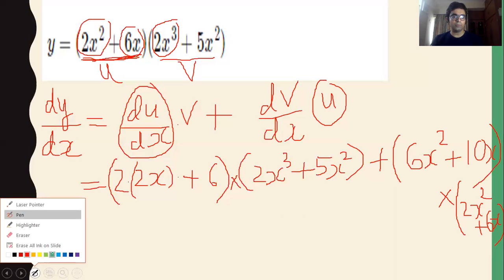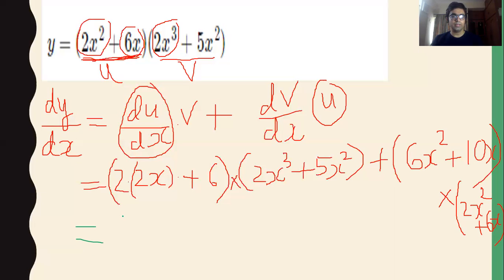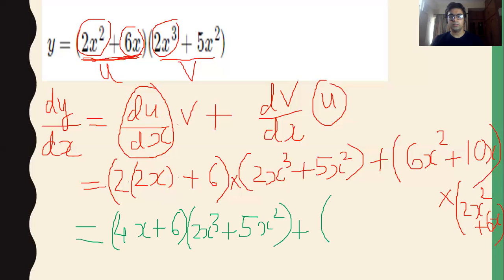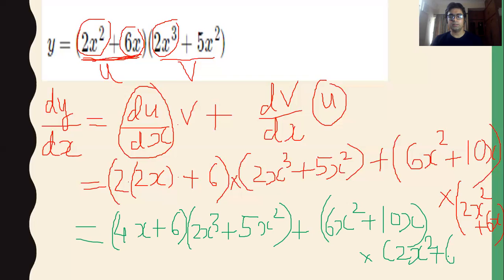Now you have to solve this. You get: (4x + 6) into (2x³ + 5x²), plus (6x² + 10x) into (2x² + 6x). This will be your final answer. You can further simplify if you want, but I have shown you how to apply the rule.